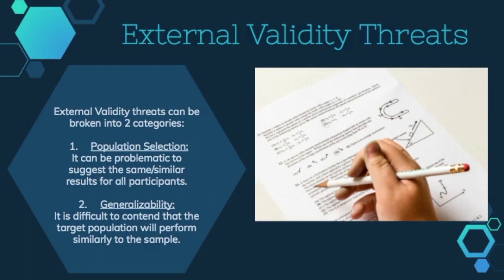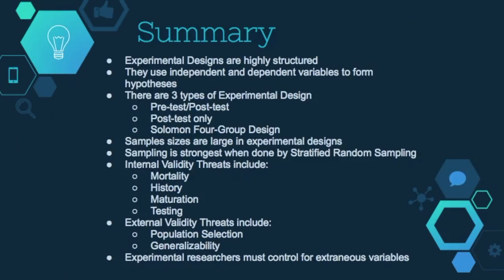The two types of external validity threats guarded against in experimental design are population selection and generalizability. In summary, experimental designs are highly structured. They use independent and dependent variables to form hypotheses. There are three types of experimental design: pre-test/post-test, post-test only, and Solomon 4 group design. Sample sizes for experimental designs are large, and sampling is strongest when done by stratified random sampling. Internal validity threats for experimental design include mortality, history, maturation, and testing. External validity threats include population selection and generalizability. Experimental researchers must always control for extraneous variables.